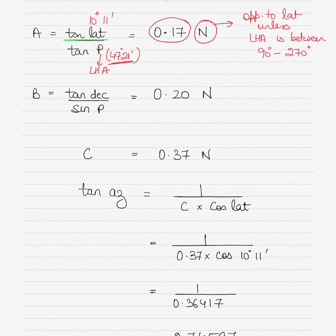Then you find B. B equals tan of declination divided by sine of the LHA. Put the values in the formula and find your B. Again ignore any negative sign and stick to two decimal places. B is named same as declination. Declination was north, so your B is north.